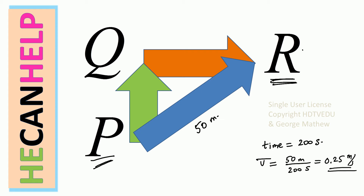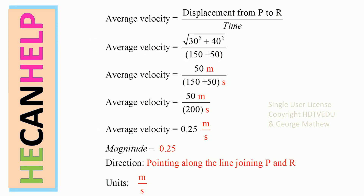In what direction? It is directed from P to R. So the average velocity is the displacement from P to R.